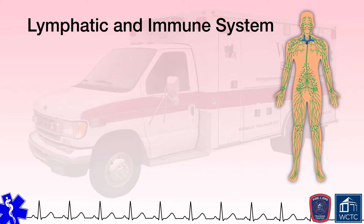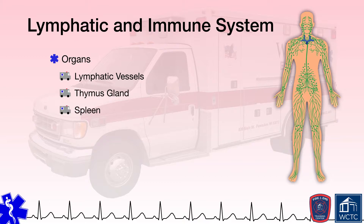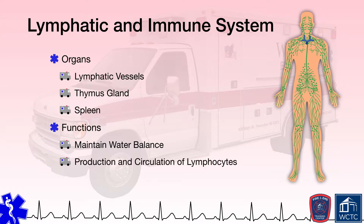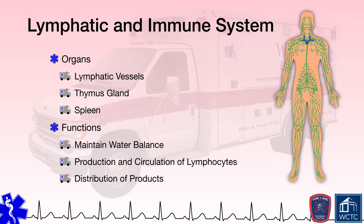The lymphatic system is actually considered part of the circulatory system. It consists of lymphatic vessels, the thymus, and the spleen. The lymphatic system both removes excess fluid from tissues of the body while also recovering fluid as necessary to maintain a proper balance of water within the body. It also produces and circulates lymphocytes, which are critical for maintaining the body's immunity against disease, illness, and infection. Lastly, the lymphatic system also carries various products like nutrients and some hormones that are unable to enter the bloodstream directly. The immune system also relies upon bone marrow to produce specific types of lymphocytes, and the body's immune system response will be discussed in greater depth in a later module.